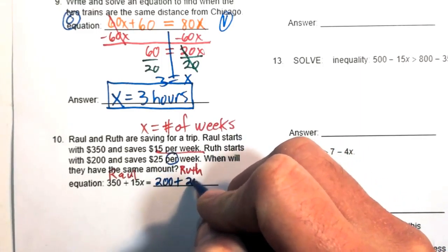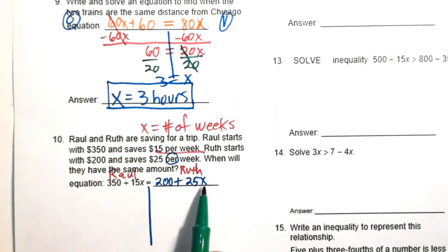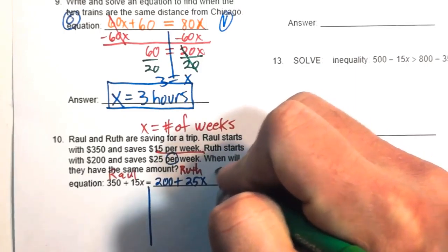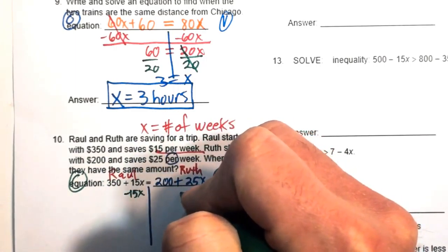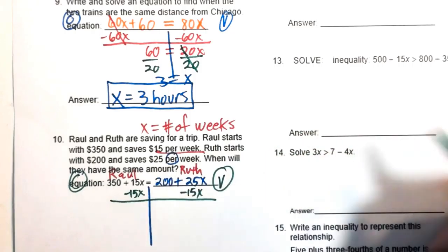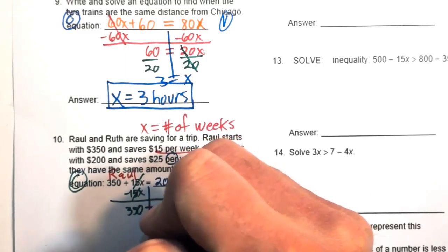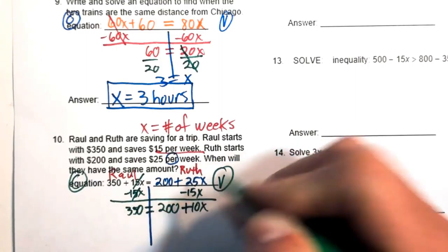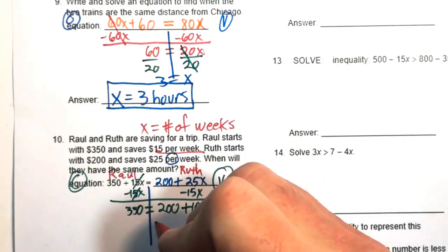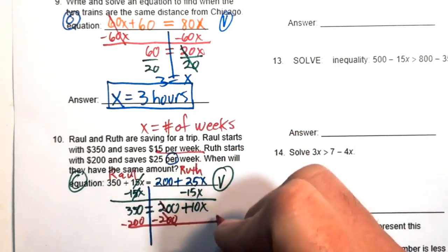Choose sides: variables on the right (larger x coefficient), constants on the left. Subtract 15x from both sides: zero plus 350 equals 200 plus 10x. Then subtract 200 from both sides: 150 equals 10x.